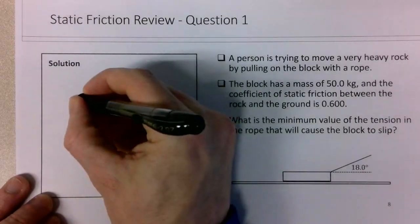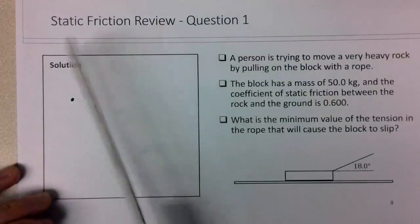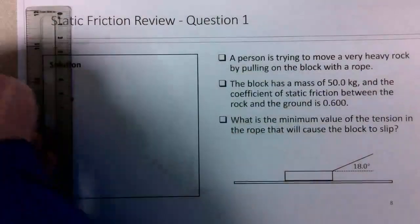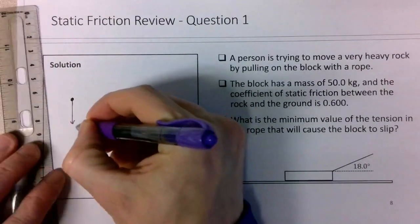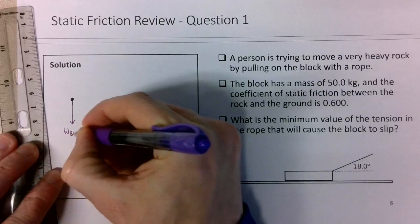So if we have to draw a free-body diagram for the block, there is a weight force, of course, on the block by the earth.